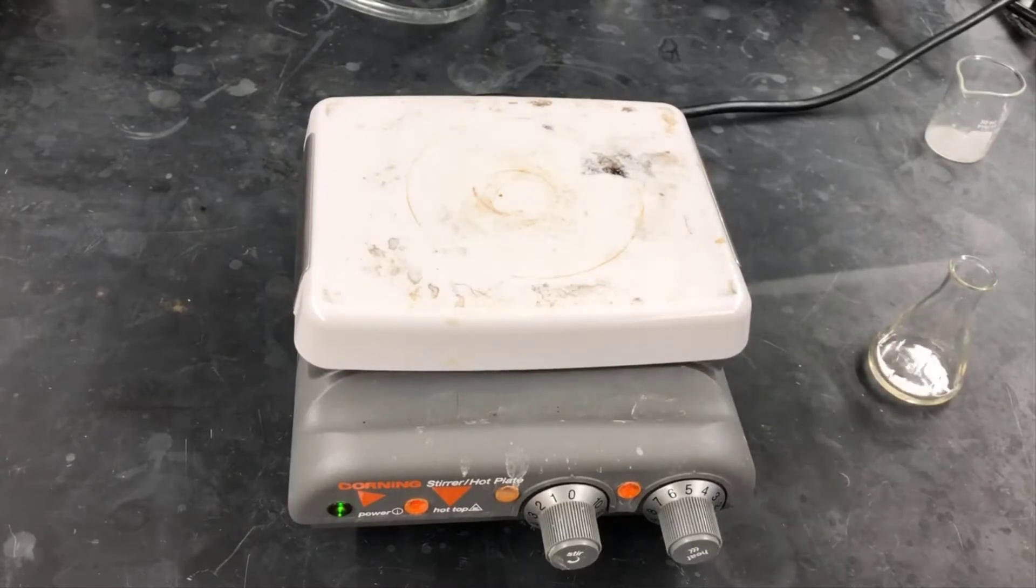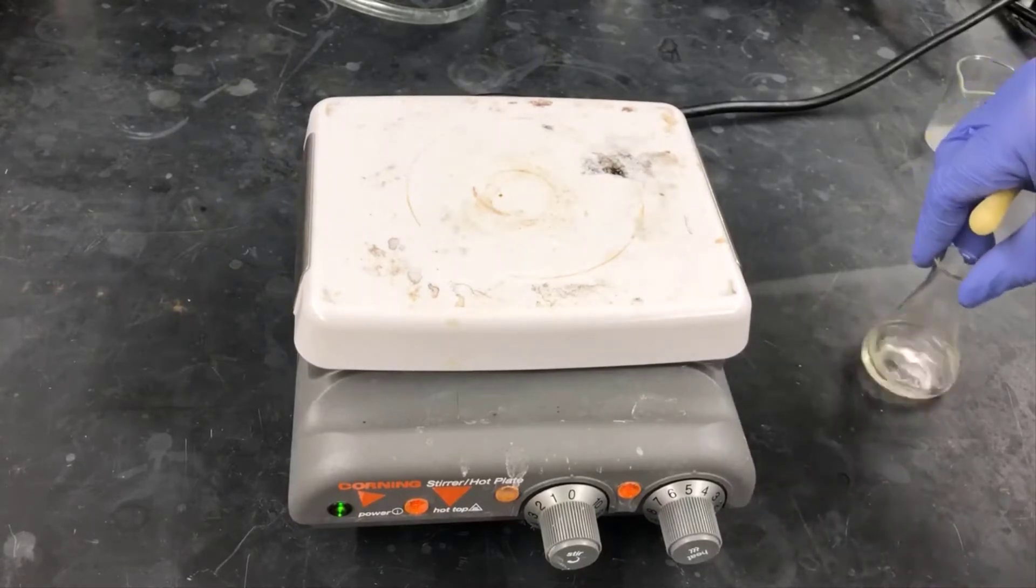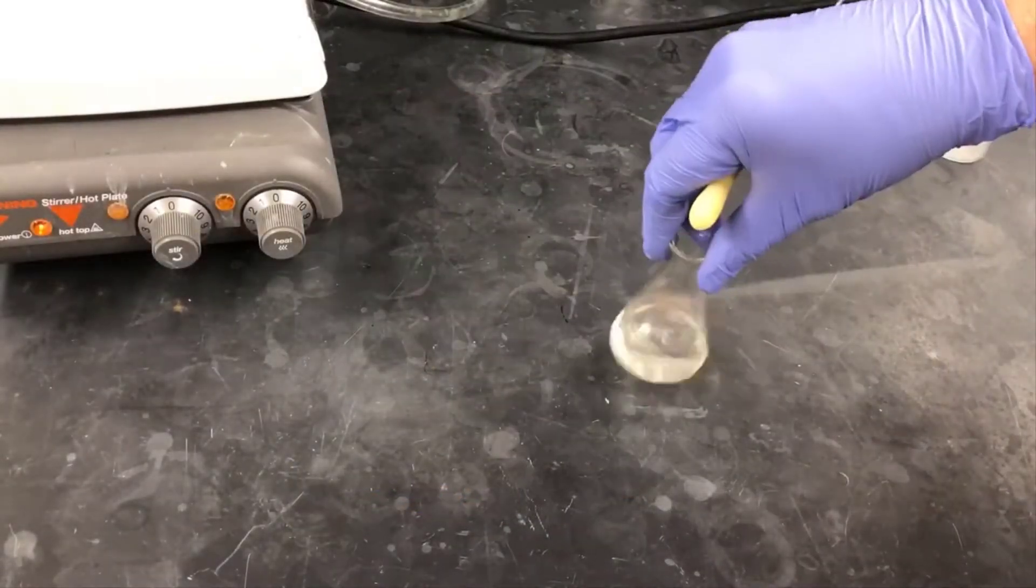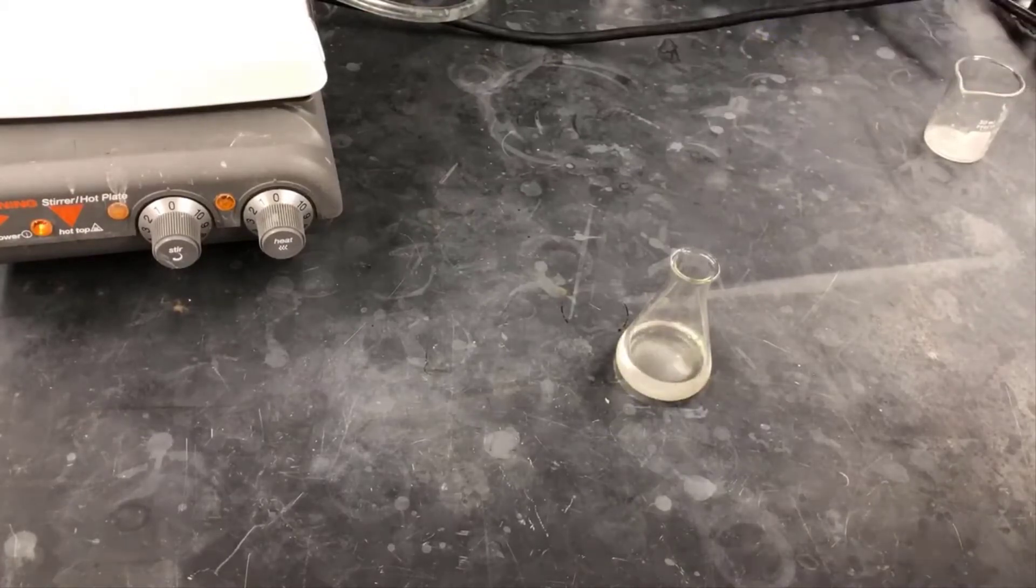Now I'm adding petroleum ether to the solution, one pipetteful at a time, giving it a swirl. I'm looking for the product to start phase separating here. Sometimes that appears as a cloudiness first, and then crystals.